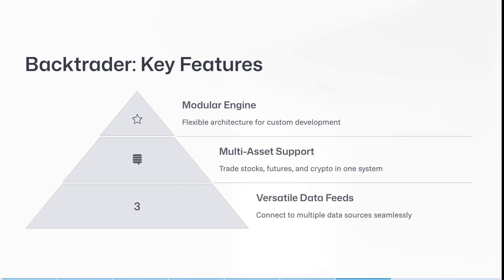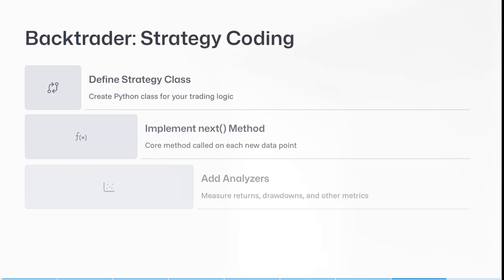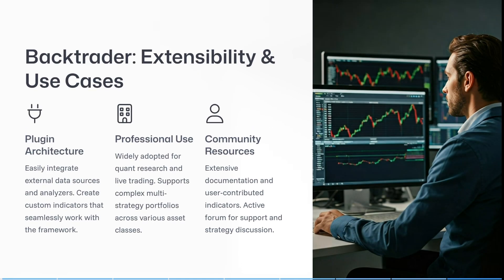Now let's have a look at BackTrader. Some of its key features include a flexible architecture for custom development. You can trade stocks, futures, and crypto all in one single system, and connect to multiple data sources seamlessly. It has defined strategy classes — you can create a Python class for your trading logic, with core methods called on each new data point. You can measure returns, drawdowns, and other metrics, use built-in charting capabilities, and easily integrate external data sources and analyzers through its plug-in architecture.